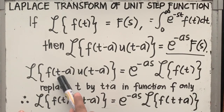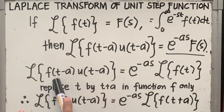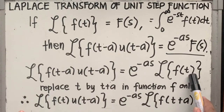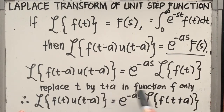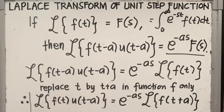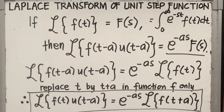Again, replace t by t plus a in function f only. So f of t minus a on the left-hand side, replacing t by t plus a, will become f of t. Copy u of t minus a, and on the right-hand side, f of t inside the operator will become the Laplace of f of t plus a. This will be your guide in finding the Laplace transform of the function multiplied by the unit step function — it contains e raised to minus as in its answer.